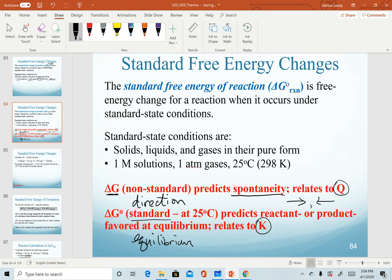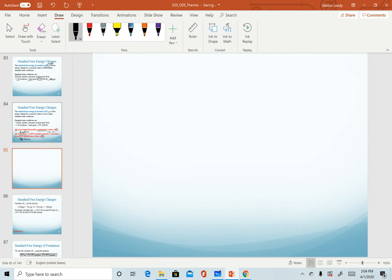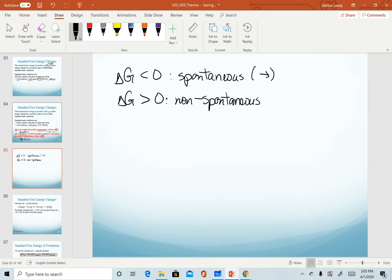Delta G NOT is our standard free energy value, and this one determines whether a reaction is product or reactant favored at equilibrium. This relates to our equilibrium constant K. For non-standard free energy, when delta G is less than zero, we say that our reaction is spontaneous—it's still moving forward or to the right to reach equilibrium. When delta G is greater than zero, the reaction is non-spontaneous, moving in the reverse direction to reach equilibrium.